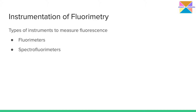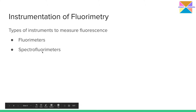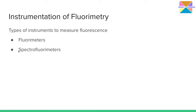We have two different types of instruments to measure fluorometry. One is the fluorometer and the other one is the spectrofluorimeter. The fluorometer is somewhat similar to the one used in UV-visible spectroscopy — that is, the colorimeter or absorption meters — where the wavelength selectors are filters. The spectrofluorimeter uses monochromators as wavelength selectors: one excitation monochromator and one emission monochromator. The fluorometer, similarly, uses primary filters and secondary filters.